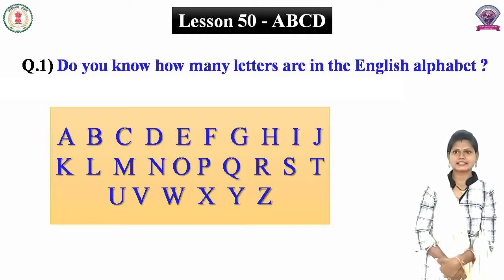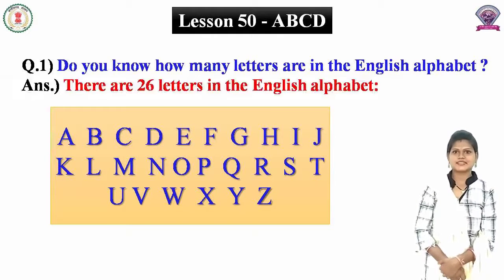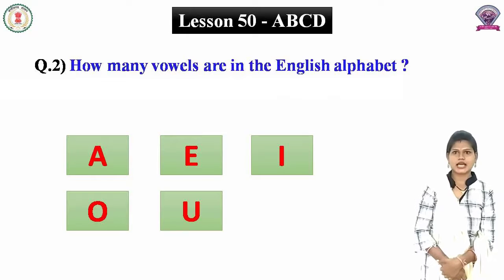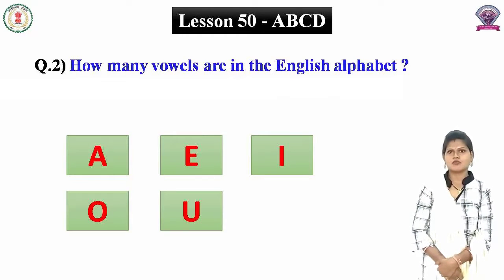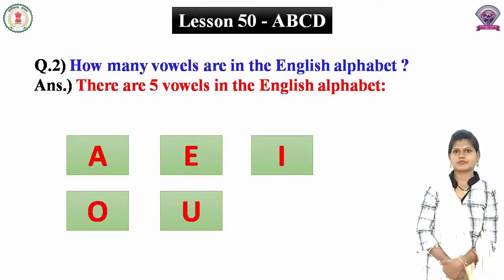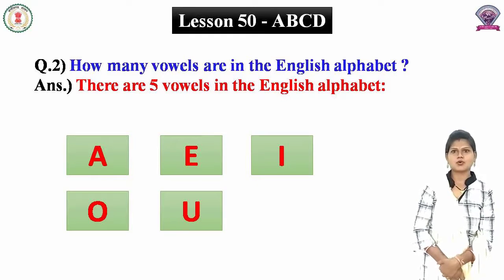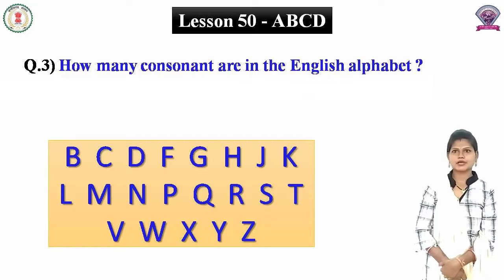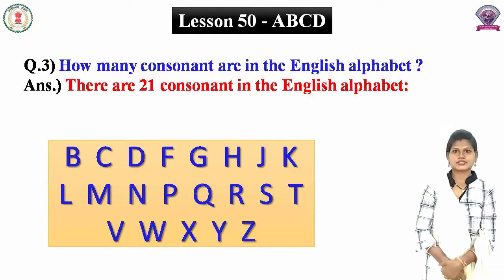Do you know how many letters are in the English alphabet? Kya aapko pata hai English alphabet mein kitne letter hote hain? There are 26 letters in the English alphabet. Humare English alphabet mein total 26 letter hain. How many vowels are in the English alphabet? Kya aapko pata hai English alphabet mein kitne vowels hote hain? There are five vowels in the English alphabet. English alphabet mein paanch swar hote hain. Chaliye dekhte hain woh kaun kaun se hain: A, E, I, O, U. How many consonants are in the English alphabet? English alphabet mein kitne consonant hote hain? There are twenty-one consonants in the English alphabet. English alphabet mein ikkees vyanjan hote hain.